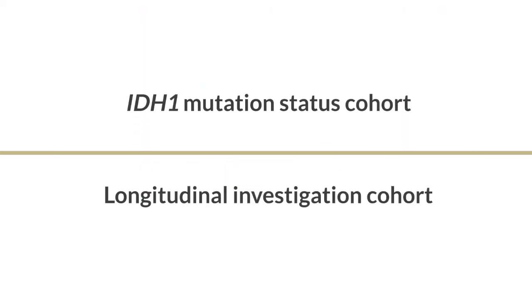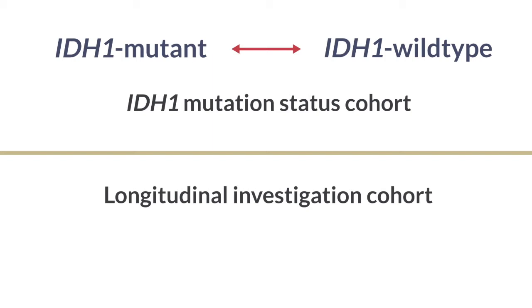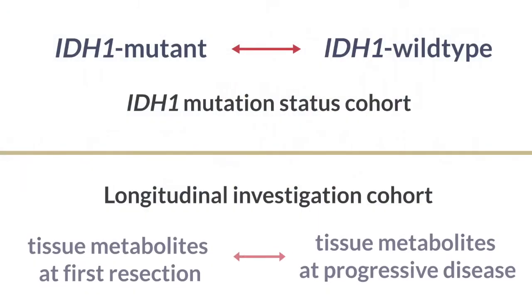Using this approach, we investigated 101 tissue samples from 73 glioma patients and created two different cohorts for comparing the metabolite profiles: the IDH1 mutation cohort and the longitudinal investigation cohort. In the IDH1 mutation cohort, we compared metabolites in IDH1 mutant versus IDH1 wild-type tissue samples. In the longitudinal investigation cohort, we investigated tissue samples from patients who underwent several resections and compared tissue metabolites at first resection with tissue metabolites at progressive disease.